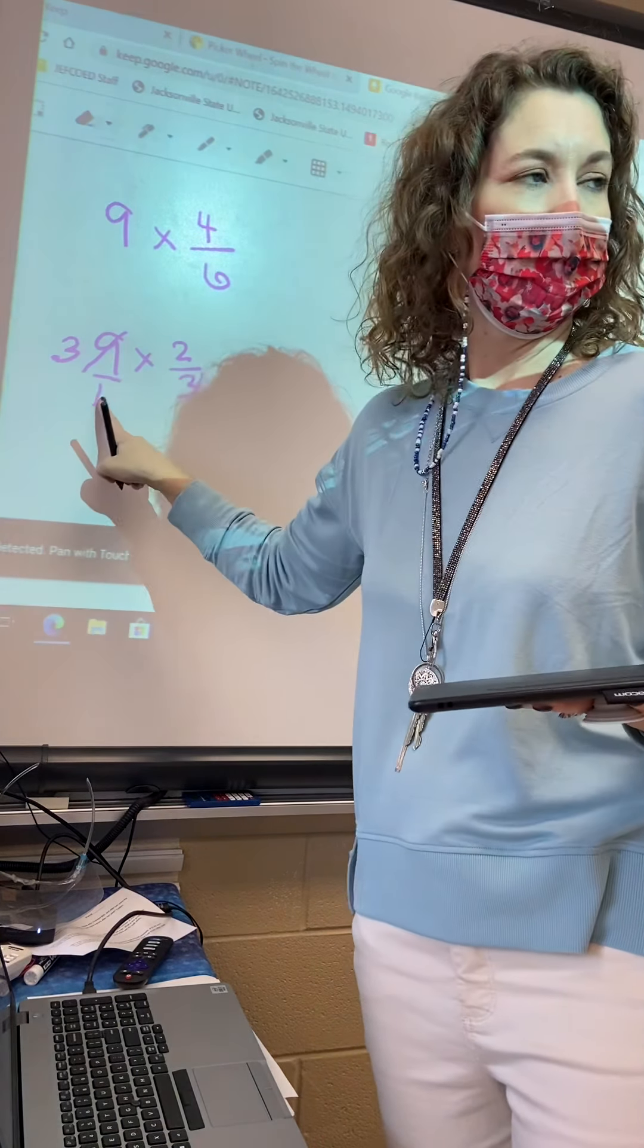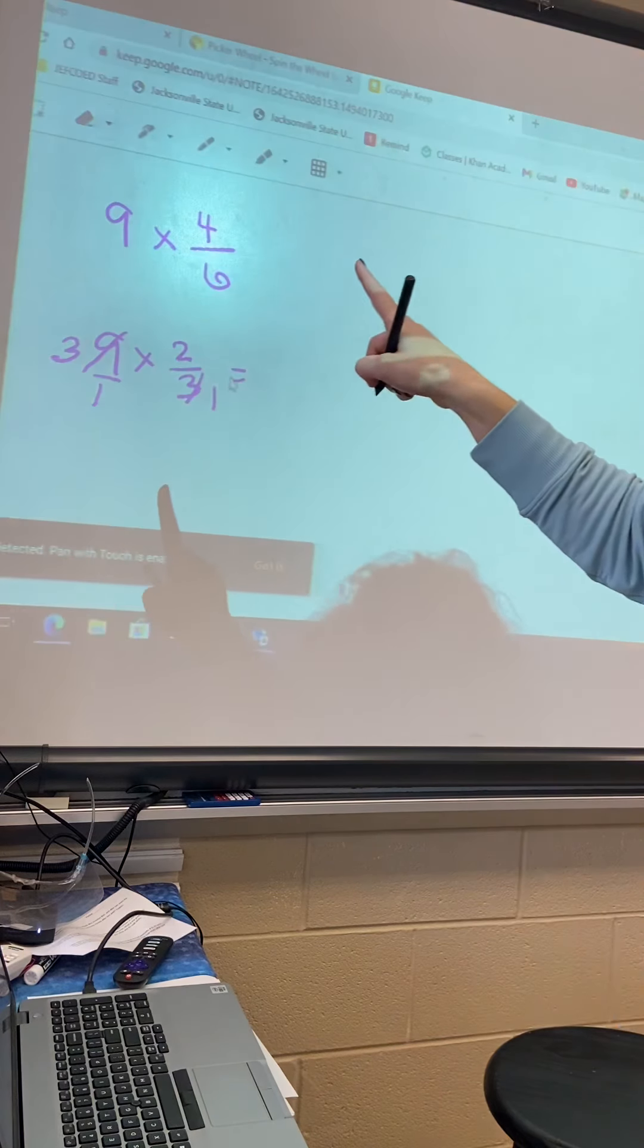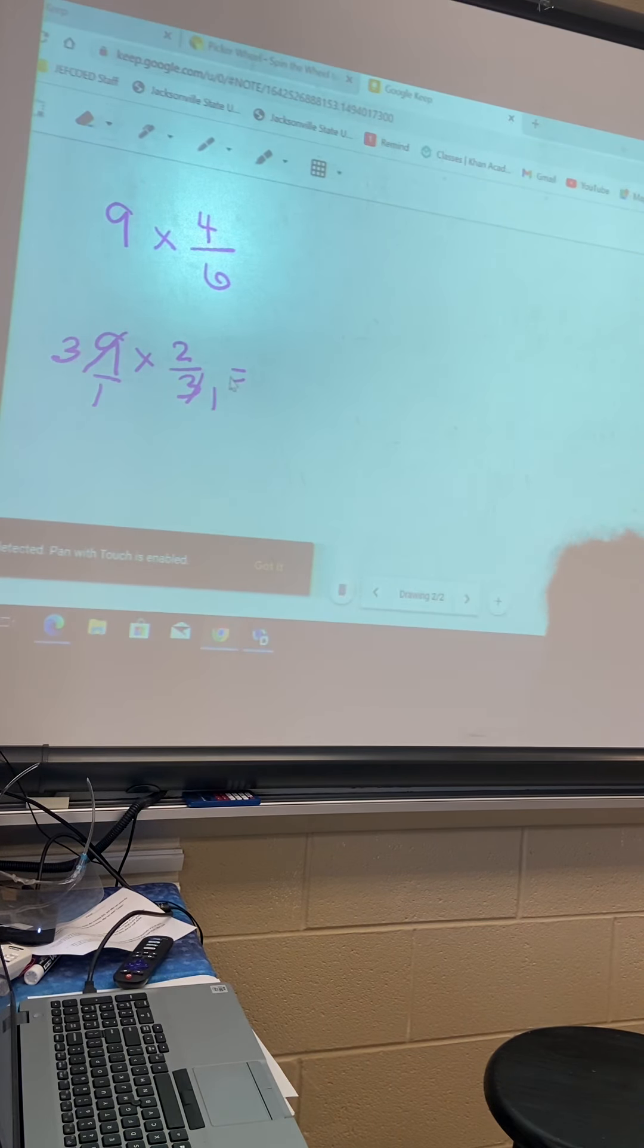They don't. So we just multiply straight across. 3 times 2 is? 6. Yeah. Wake up. 1 times 1 is? 1. 1 is sacred. That's still a mad fraction. How can I make it happy? What is 6 over 1 equivalent to? 6.